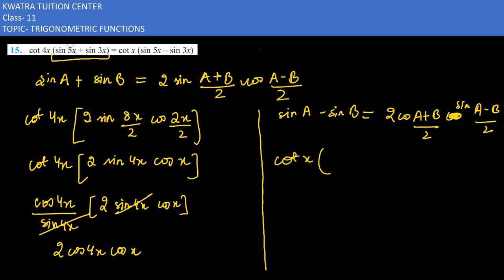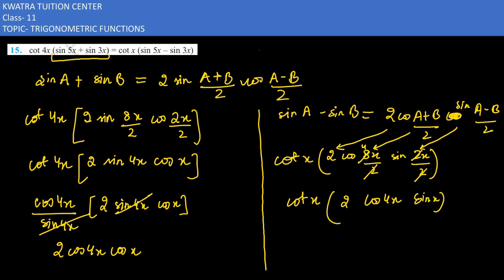Now apply this on the right hand side. You will have cot x, getting the 2 here, and then I would be having cos 8x by 2, then I would be having the last term as sin 2x by 2 which can be cancelled with 2. This would be 4. I would have cot x, then in multiplication 2 cos 4x is there, sin x is there.